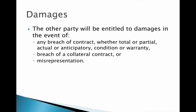What actually happens when there's a breach? One of the key remedies available is damages. Damages are available for any breach of contract, whether it's a total breach, partial breach, an actual breach, or an anticipatory breach. An anticipatory breach occurs where someone indicates they're not going to fulfil their part of the bargain — for instance, you know someone's not going to pay you. Damages are available whether it's a condition or a warranty, whether it's the breach of a collateral contract or a misrepresentation. The key role of damages is to put you back into the position you would have been in if the contract had come to fruition — to compensate you for the damage caused.